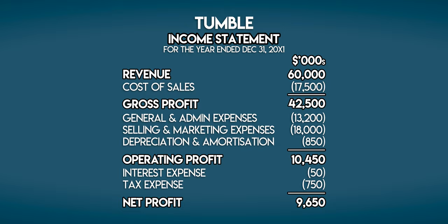I've put together two cheat sheets covering the direct and the indirect cash flow statement — I like to think of them as one-page reference guides to help you out. If you'd like to support the channel then you're welcome to buy them on my website. How do we make a cash flow statement? It's time for that example and we'll be using the indirect method because it's easier. We'll need a couple of things to get started. First we need an income statement — here's one for a business called Tumble, which is a fictional dating app. It summarises Tumble's revenues and expenses for the year ended December 31st.